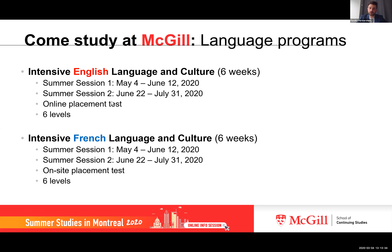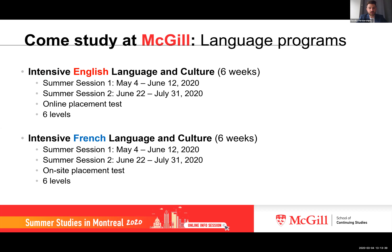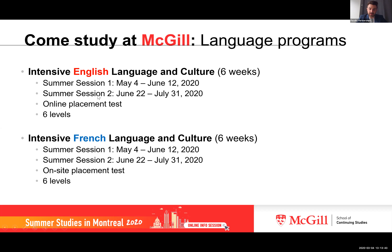The language programs are offered in two sessions: the first summer session is from May 4th to June 12th, and the second summer session is from June 22nd to July 1st. You are able to sign up for both if you like. English and French are offered at the same time. For English, you do an online placement test upon registration to determine your level of proficiency, placing you in one of six levels from beginner to advanced. For French, you do the placement test on site once you arrive in Montreal.